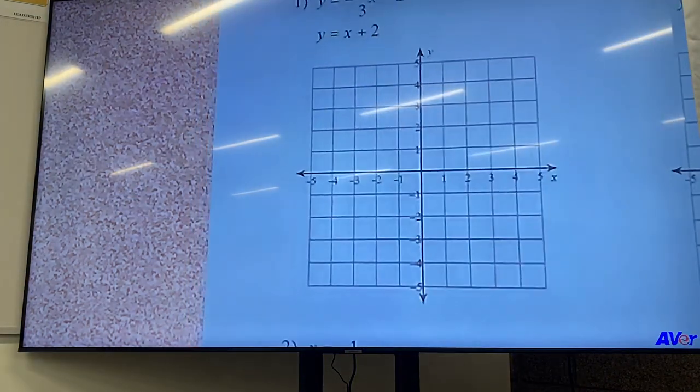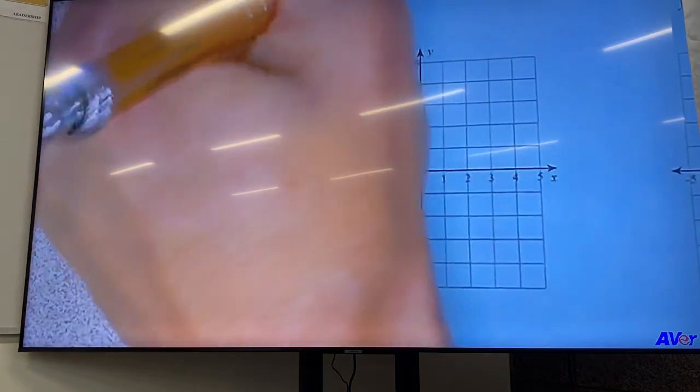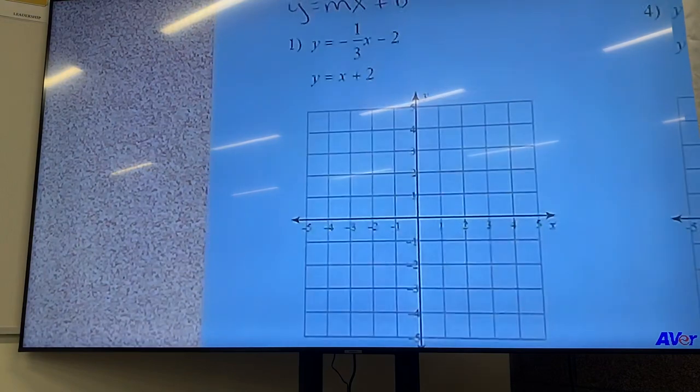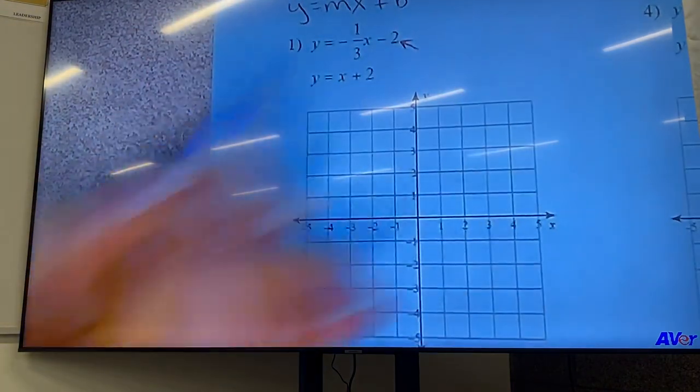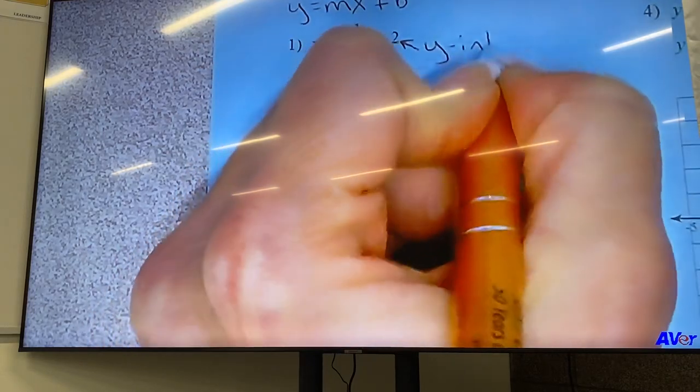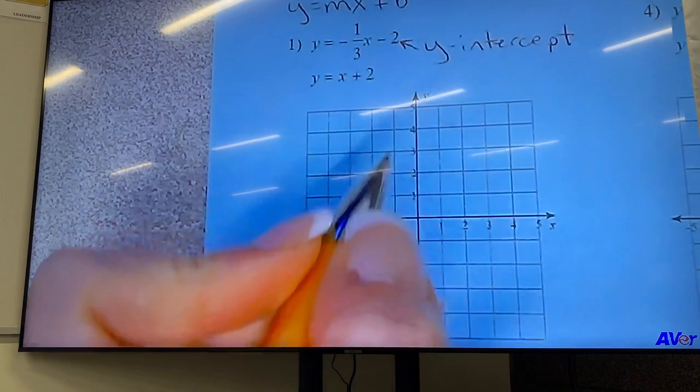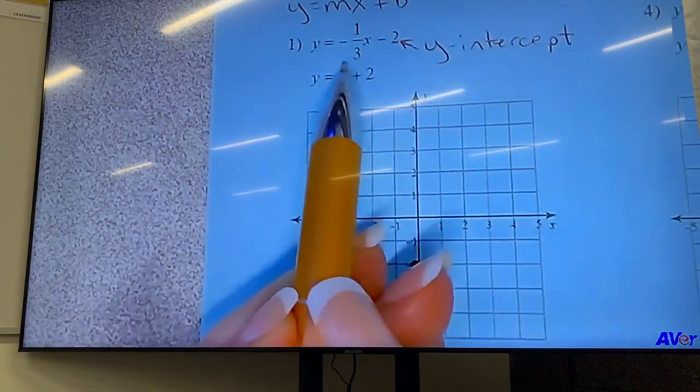Problem number one. So remember, y equals mx plus b, right? So the number on the end, that's the b, that's the y-intercept. So that is where we start on the graph. So at negative 2 on the y-axis.